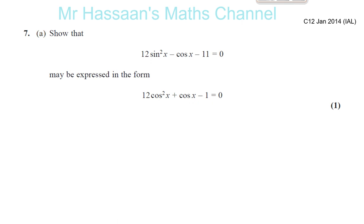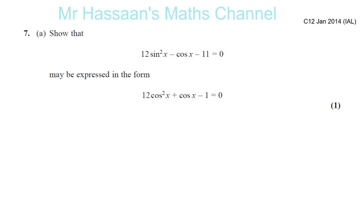Now on to January 2014, C1-2, question number 7 — a question about trig equations and identities.